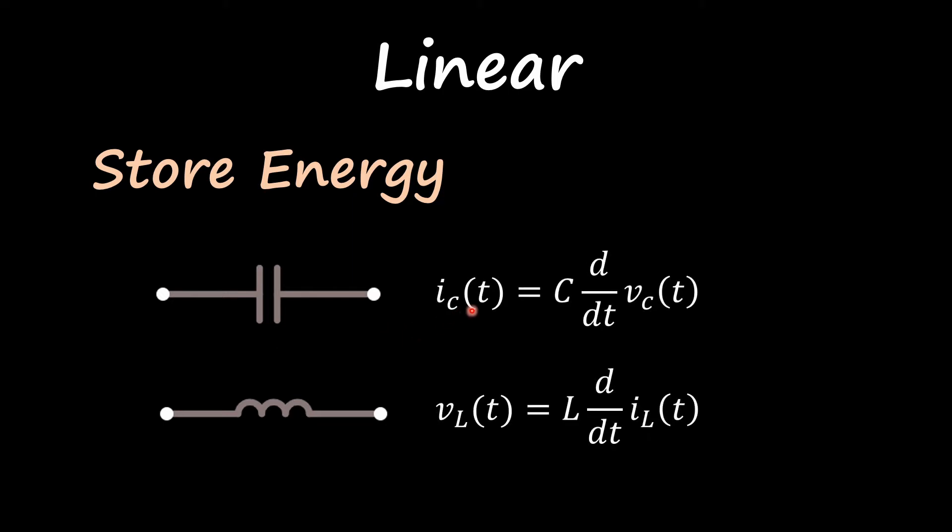For the capacitor, the current is equal to the capacitance times the derivative of the voltage. For the inductor, the voltage is equal to the inductance times the derivative of the current. Knowing these two equations, when we analyze circuits where capacitors and inductors are present, we're going to have differential equations.